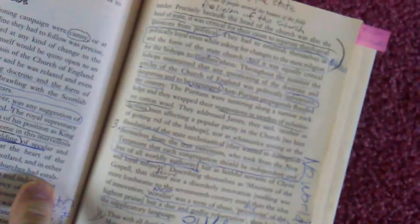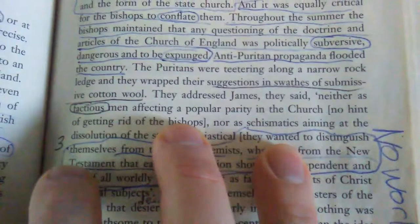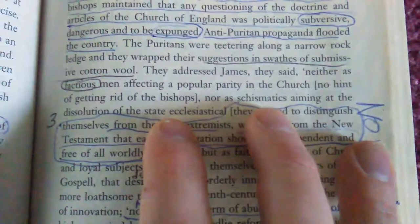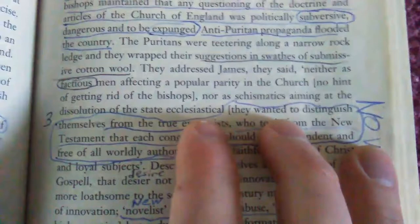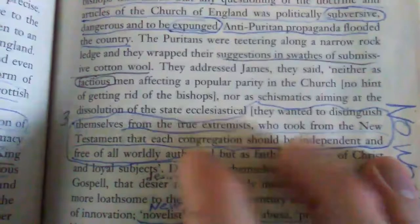They addressed James. They said, neither as factious men affecting a popular parity in the Church, no hint of getting rid of the bishops, because that's what they're saying. They're talking about getting rid of the bishops, nor as schismatics aiming at dissolution of the state ecclesiastical. They wanted to distinguish themselves from the true extremists who took from the New Testament that each congregation should be independent and free of all worldly authority. That's exactly what you're supposed to do. You're supposed to follow Christ, even if that means that they come to your house and burn your house down.